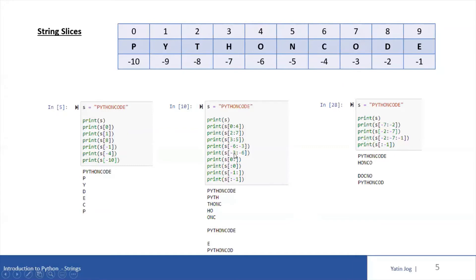If I try to print starting from minus 3 till minus 6, what will happen? Starting from minus 3 till minus 6 — we cannot go in the reverse direction. We can always go with the print statement in the forward direction. By default, print and slices go in the forward direction. So starting from minus 3, we cannot go back to minus 6, and that is why we are getting a null string as output.